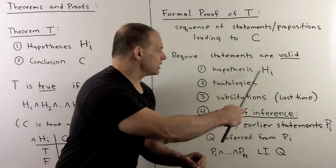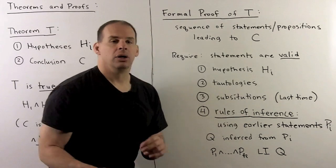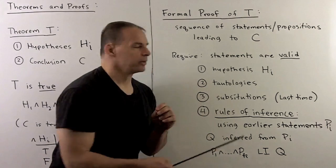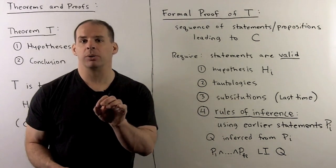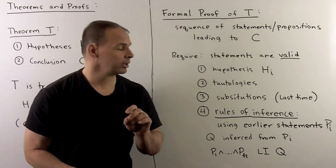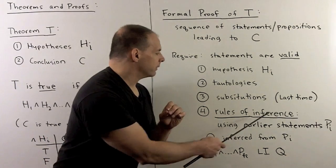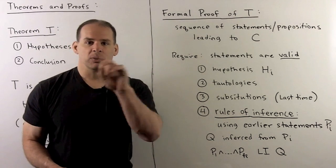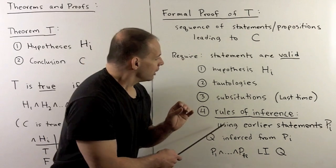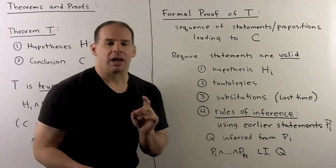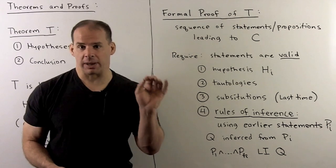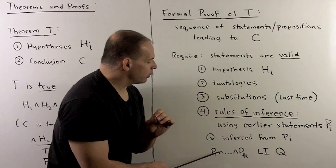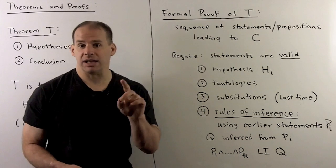We can use any hypothesis H sub i. We can apply any tautologies. We can use any substitutions — I called these change of variable and change by logical equivalence. And we can use the rules of inference. As we progress through our proof, we generate a sequence of statements. Using earlier statements p sub i, I can use any q that's inferred from them — that is, if p1 and p2 up through p sub k logically implies q.